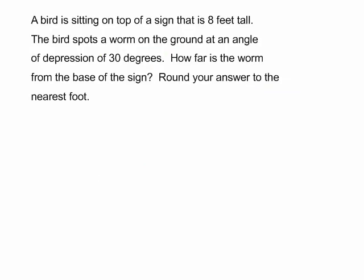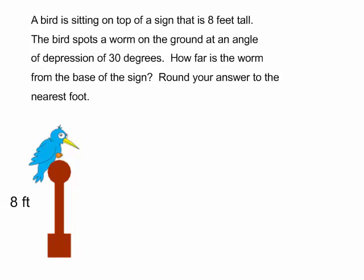A bird is sitting on top of a sign that is 8 feet tall. The bird spots a worm on the ground at an angle of depression of 30 degrees. How far is the worm from the base of the sign? Round your answer to the nearest foot. So I do have a bird that is sitting on top of an 8 foot pole. And he sees a worm.